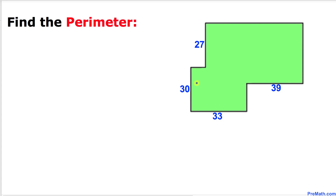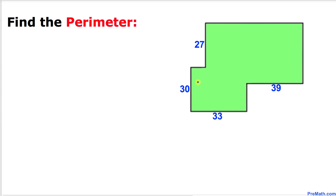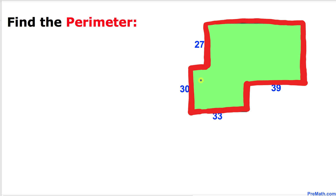Welcome to pre-math. In this video tutorial we are going to calculate the perimeter of this given shape, whose side lengths are 27, 30, 33, and 39. So let's go ahead and get started with the solution.